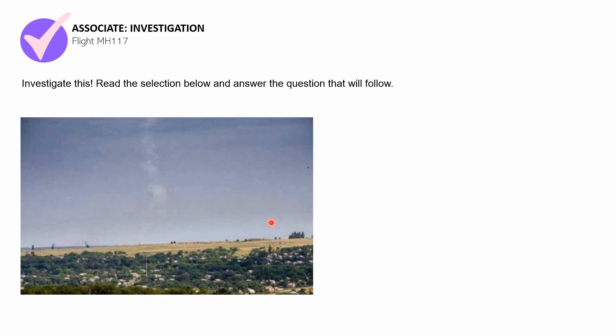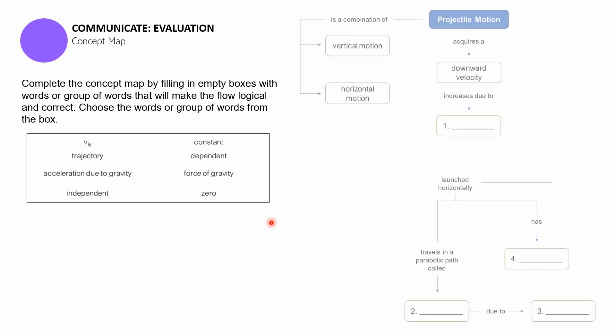And so, we're done with the second part of this session, Associate Investigation for Flight MH117. Now we move to the last part of this session, which is Communicate Evaluation. This is done through a concept map. What you need to do is complete the concept map by filling in empty boxes with words or group of words that will make the flow logical and correct. Choose the words from the following box. You can now begin answering this.